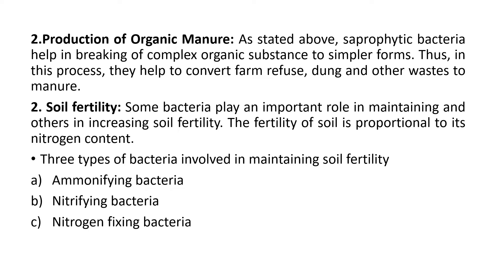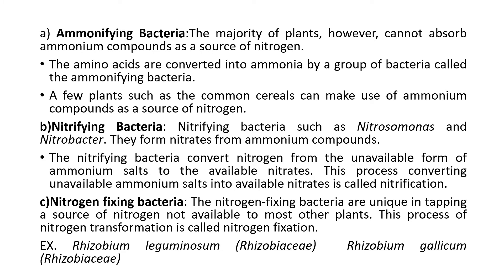Moving to the higher sciences, we will study how bacteria are involved in maintaining soil fertility. You have ABC: ammonifying bacteria, nitrifying bacteria, and nitrogen-fixing bacteria. All three are involved in the same overall process but the steps they take differ. Ammonifying bacteria: the majority of plants cannot absorb ammonia or ammonium compounds as a source of nitrogen, so amino acids are converted to ammonia by a group of bacteria called ammonifying bacteria. There are a lot of ammonifying bacteria used with common cereals that use ammonium compounds as a nitrogen source.